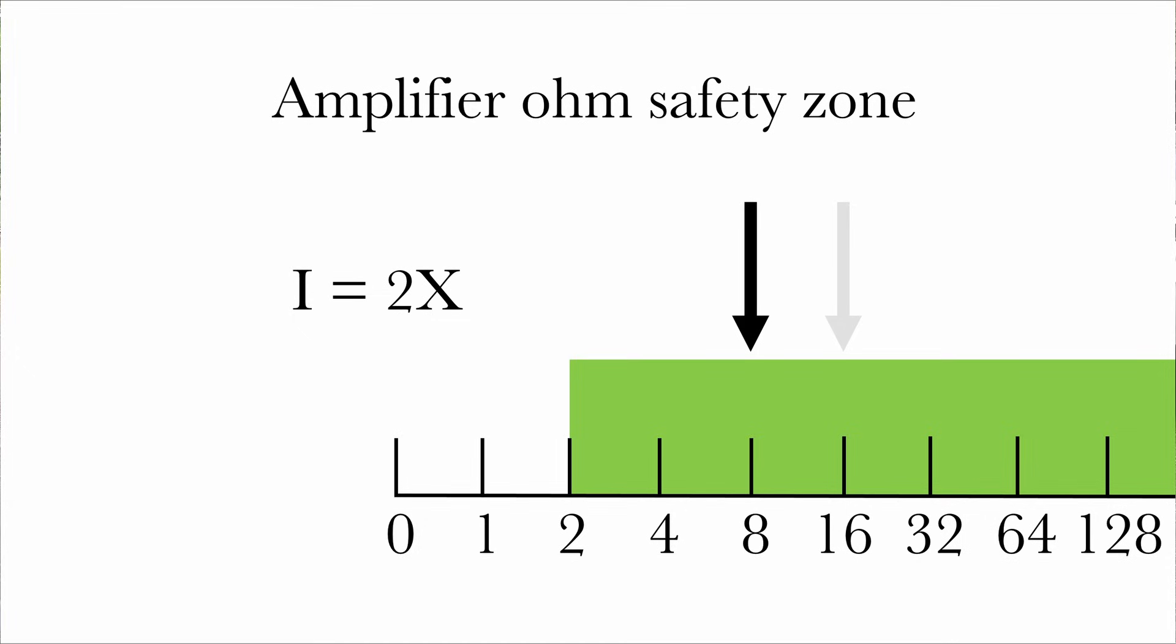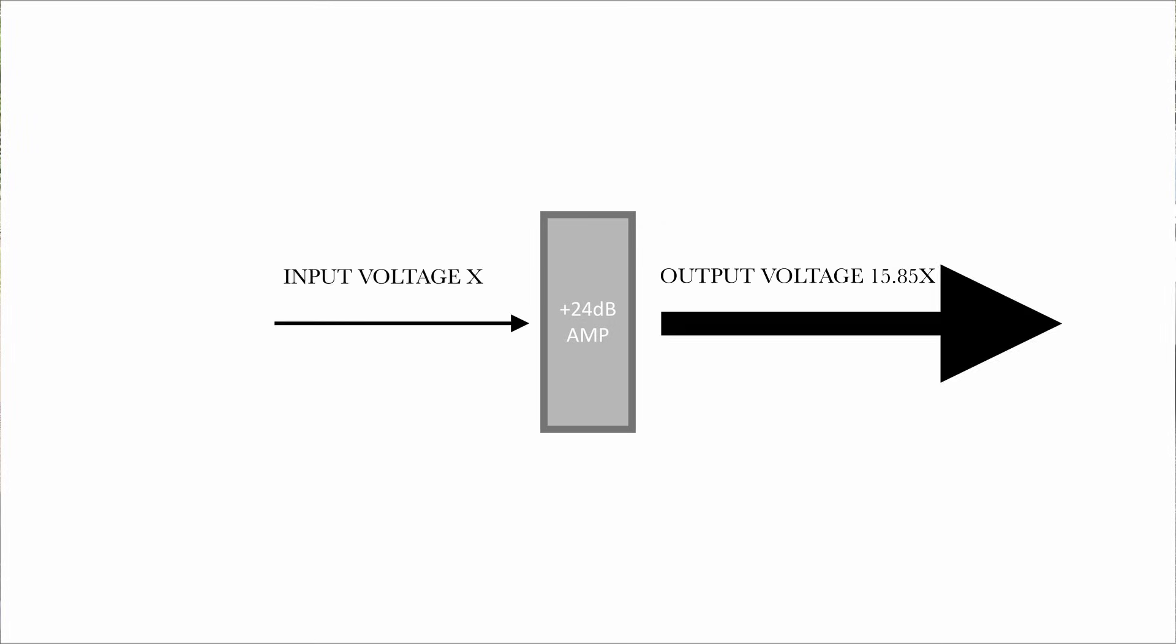This doubles the current out of the amp, but keeps the voltage the same. Almost all audio amplifiers are designed to maintain a certain voltage output at a given voltage input level, and the current is what changes as the load on the amp changes.